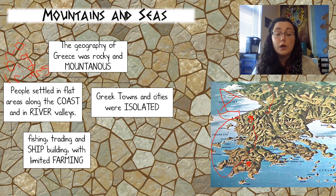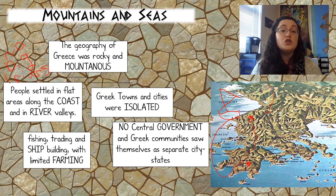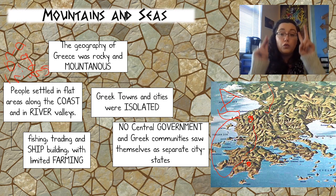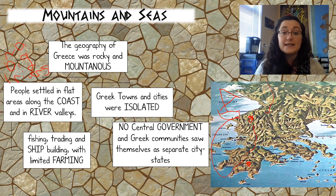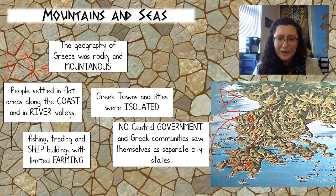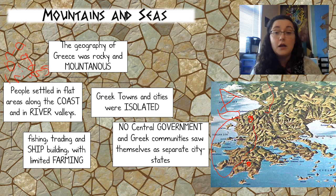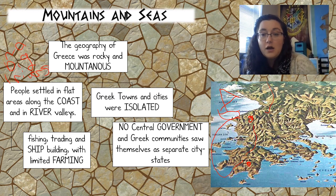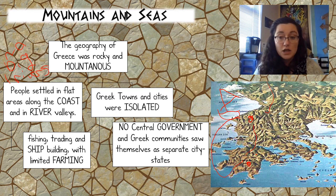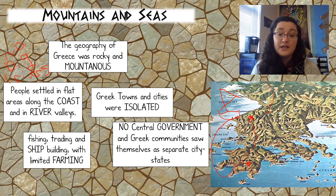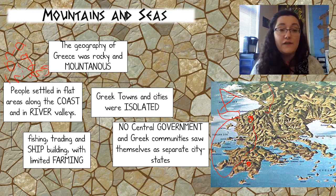Greek towns and cities were very isolated. It was hard to communicate — they could, but it would take a very long time. Because of that, there was no central government. There wasn't one Greek government, and Greek communities saw themselves as separate city-states. In the ancient world, they wouldn't say 'I'm from Greece'; they would say 'I'm from Athens' or 'Sparta' or any of the other little city-states dotted all over the peninsula. So they fought a lot, and each city-state developed independently.